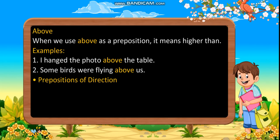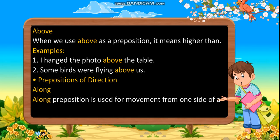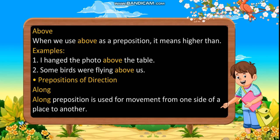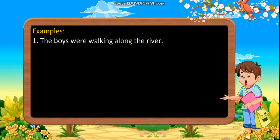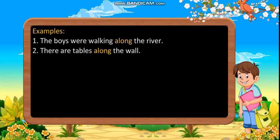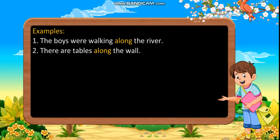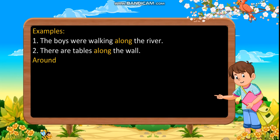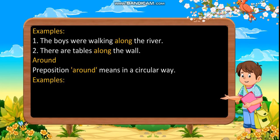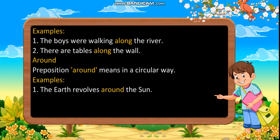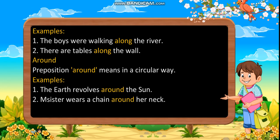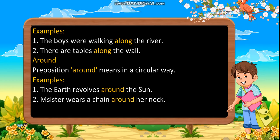Prepositions of direction. Along: along preposition is used for movement from one side of a place to another. Examples: first, the boys were walking along the river. Second, there are tables along the wall. Around: preposition around means in a circular way. Examples: first, the earth revolves around the sun. Second, my sister wears a chain around her neck.